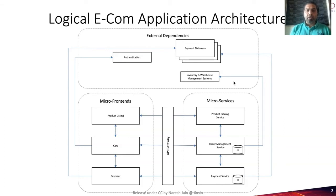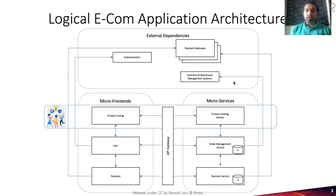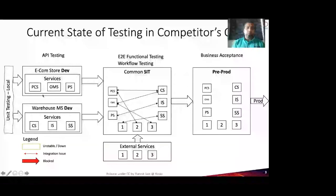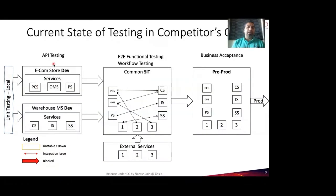For most of us working in cross-functional teams, we create squads or scrum teams that cut across applications — your e-commerce store and another application like the warehouse management system. Each has a set of services within them. You can see warehouse-related services and e-commerce-related services. We do API testing of these in CI environments, and when it's time to integrate, we bring them all into a common system integration testing environment and throw everything together along with some external services.